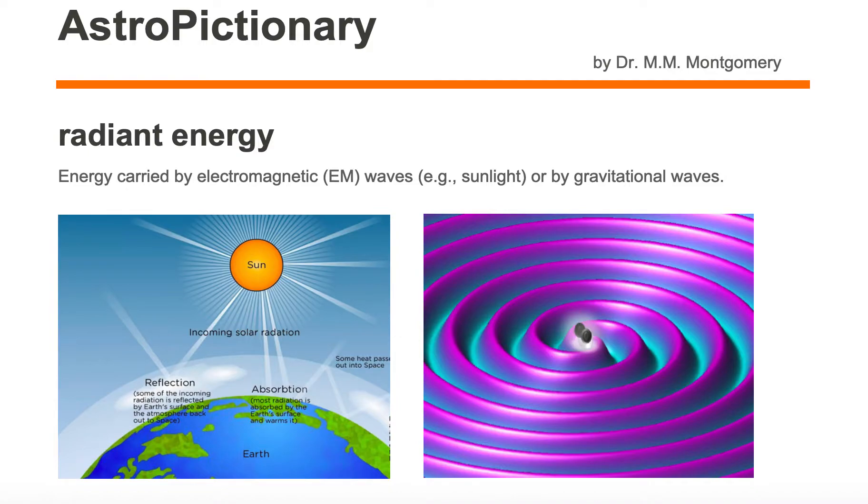Radiant energy is energy carried by electromagnetic waves, for example sunlight, or by gravitational waves.